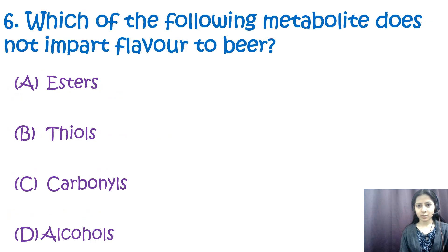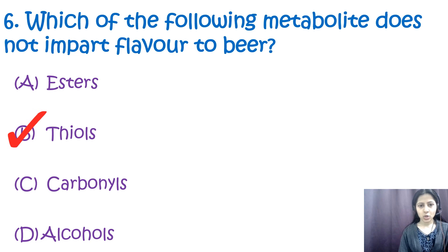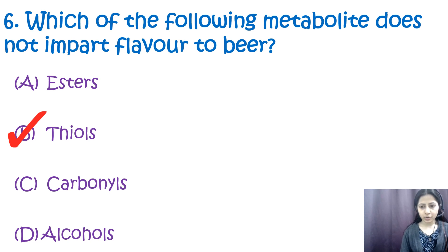Question number six: which among the following metabolite does not impart flavor to beer? Options are: a) esters, b) thiols, c) carbonyls, d) alcohols. The correct option is b, thiols. Esters are responsible for fruity or floral aromas in beer; carbonyls produce malty, caramel, honey, or buttery flavors; alcohols are the main products of yeast fermentation and provide alcoholic strength to beer.